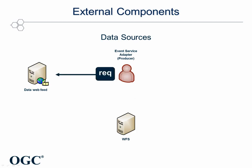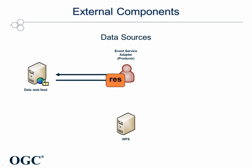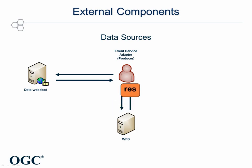They are built as a bridge between the existing web feed serving airspace activation schedules and the event service. First, the adapter has to request the current schedules from the web service. For further use, the schedule information has to be enriched and encoded in AIXM 5.1. To do so, the affected airspaces are requested from a web feature service. With this information, a new AIXM time slice is produced and sent to the event service for further dissemination.